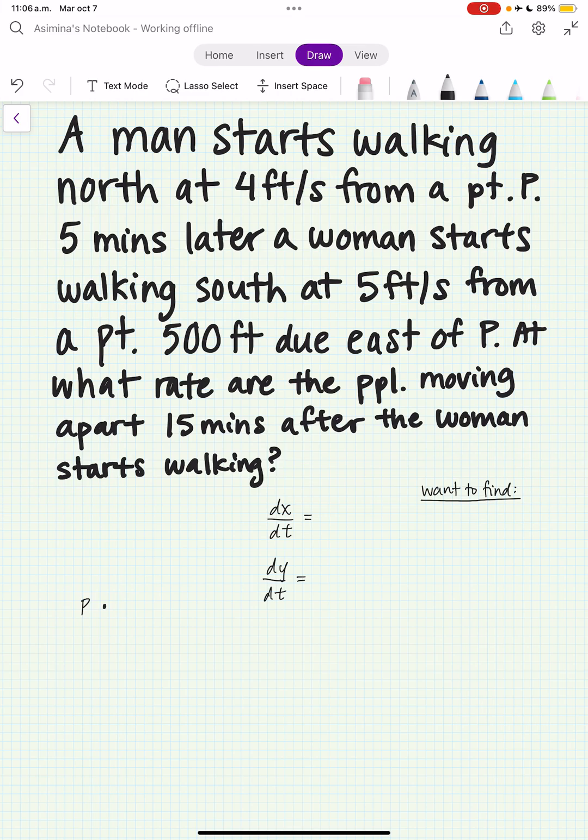A man starts walking north at four feet per second from a point P. So let's say this is P. This is the path that the man's walking. Let's call x the distance the man walks. dx/dt is four feet per second.